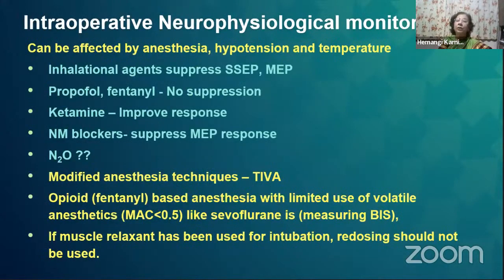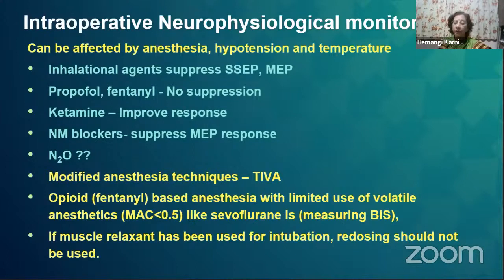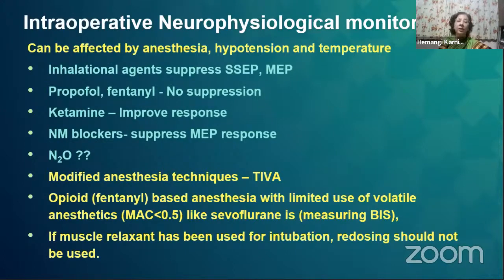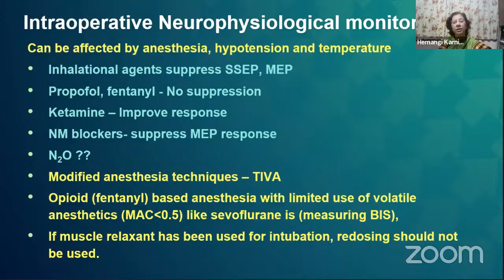Neuromonitoring or evoked potential monitoring can be affected by anesthesia, hypotension, and temperature. Inhalational agents suppress both SSEP and MEP. Propofol and fentanyl in routine doses cause no suppression and can be used; however, sudden large boluses may affect evoked potentials. Ketamine can improve the response, so before baseline is obtained one can use ketamine. Neuromuscular blockers will suppress MEP—whenever MEP is to be used, neuromuscular blockers are not used. We can use the first dose for intubation but redosing is not advocated.